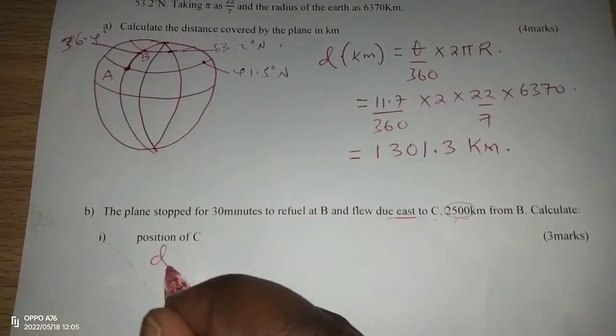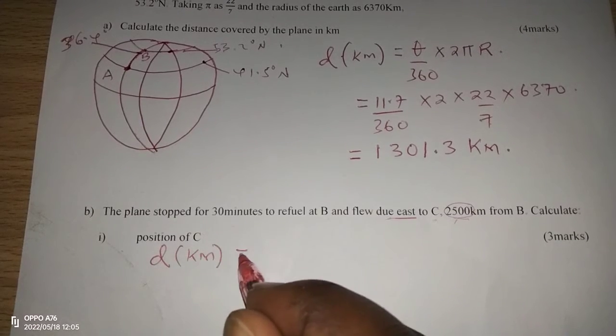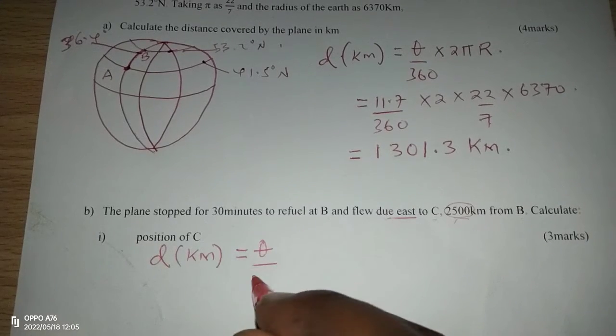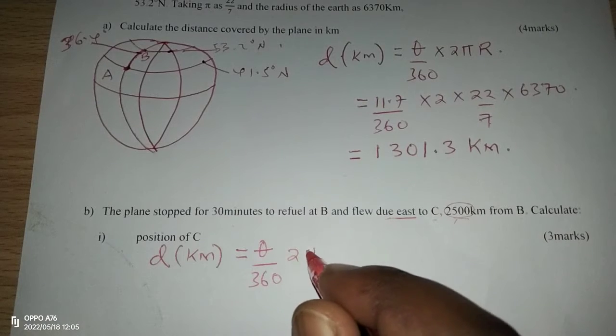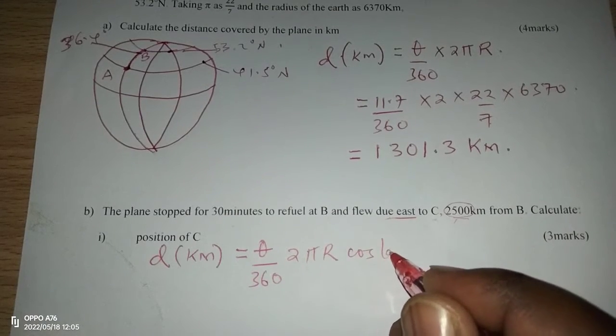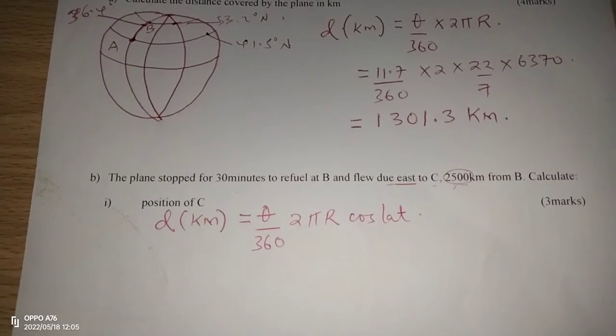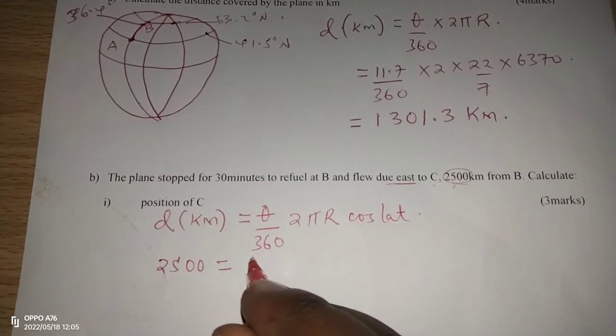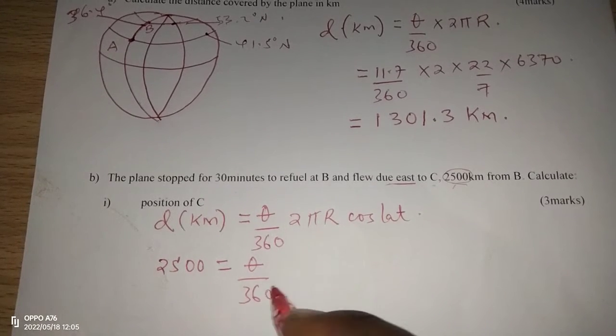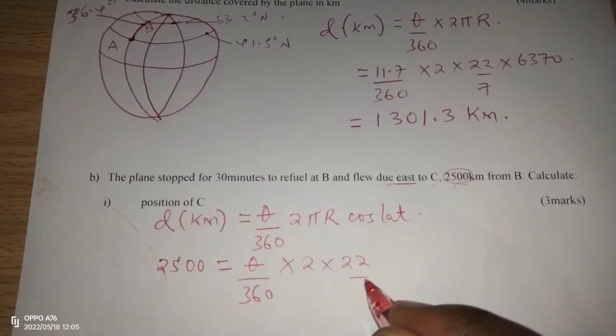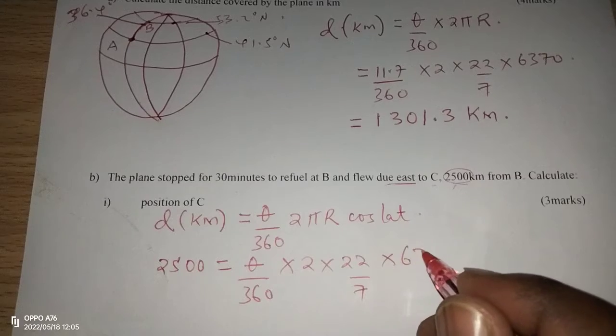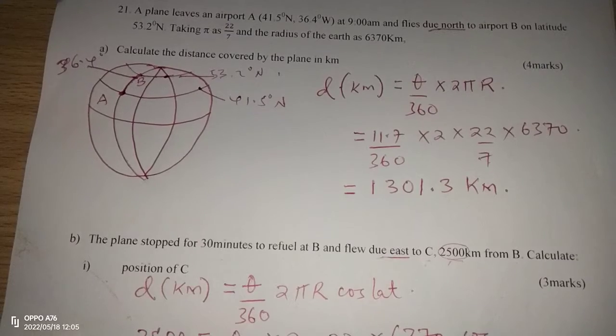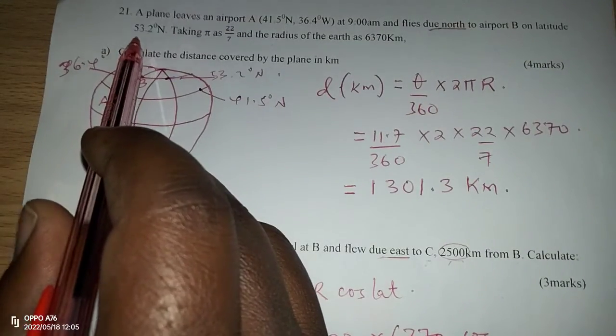The first thing to realize here is that the distance along a small circle, because now we are flying across a small circle, is given by theta out of 360, 2 pi R cosine of the latitude where the two places are lying. This means because we have the distance as 2500, equals to the angle difference, which we don't know, divided by 360, multiplied by 2 times 22 out of 7 times 6370 cosine of 53.2.